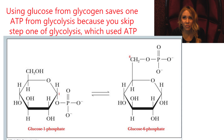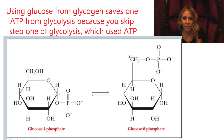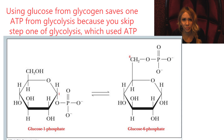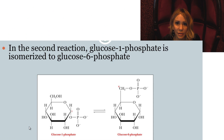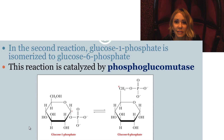So for glycolysis, if the glucose molecule enters from glycogenolysis instead of from the bloodstream, then we get 3-net ATP from glycolysis as opposed to 2-net ATP if the glucose enters the cell from the bloodstream. Why? Because we're skipping that first reaction in glycolysis that costs us an ATP.